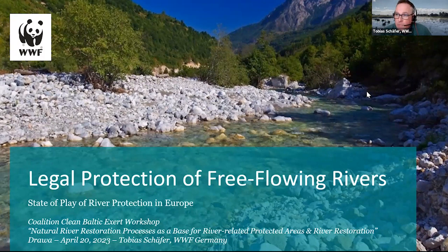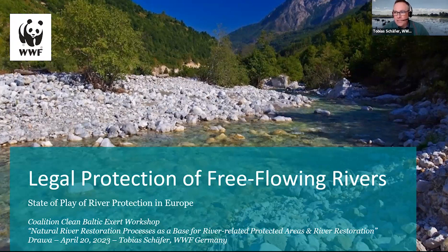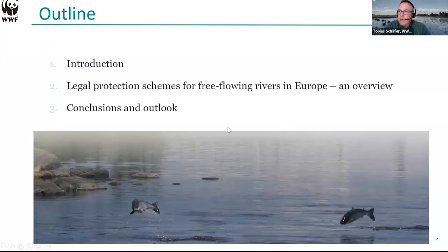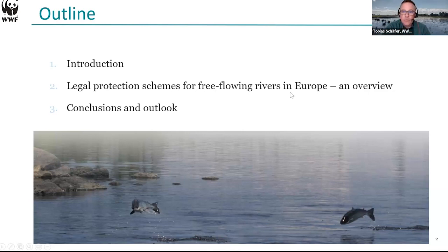I would like to give an overview of existing legal protection schemes that protect the free-flowing character of rivers. Many of them have existed before the Water Framework Directive came into place, let alone before we had a discussion on the Nature Restoration Law. This is looking back a few decades, and also looking forward. There are basically three points I would like to elaborate on, and the longest one will be the second: an overview of a study I produced two years ago on where in Europe we find legal protection schemes for free-flowing rivers.